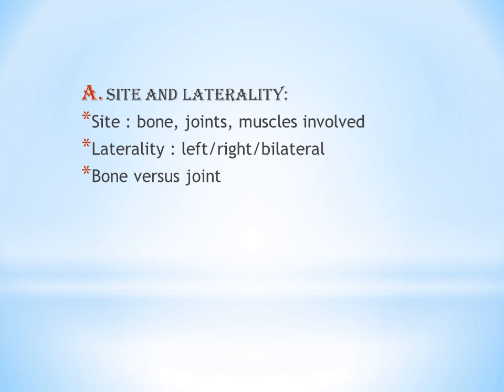If the documentation states that a condition affects both left and right, you have to search for the term bilateral. If a bilateral code exists, use that single code. If there is no bilateral code, you have to code two codes — one for left and one for right.